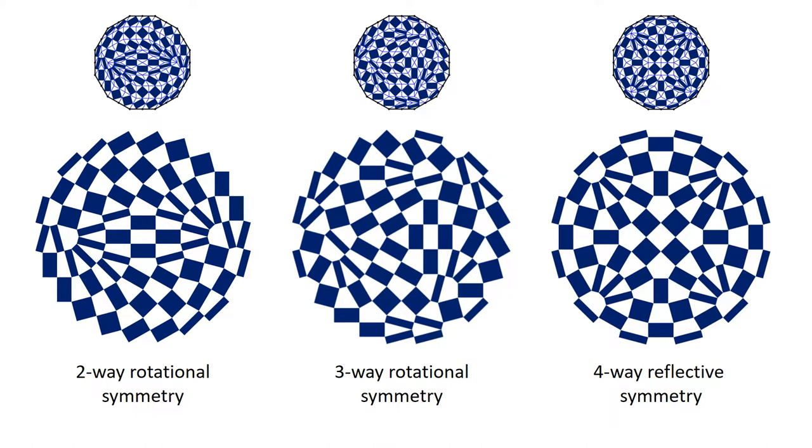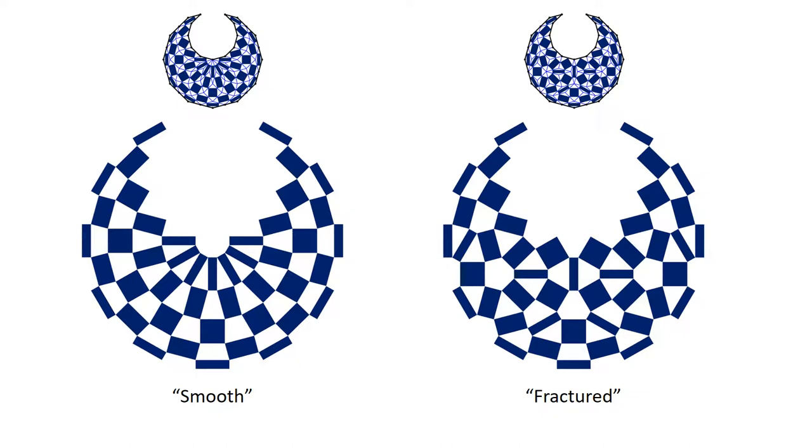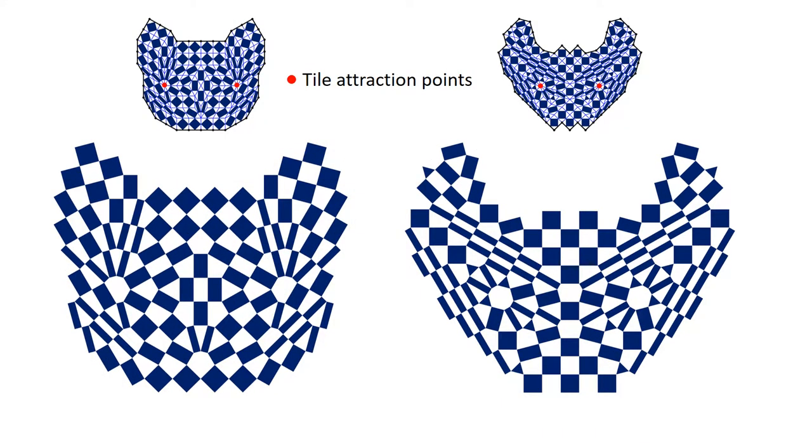We propose an integer programming based method to solve the tiling problem. Our method offers controls over the symmetries, styles, and local features of the results.